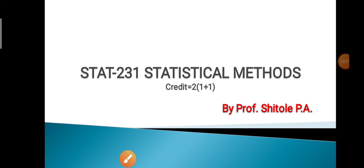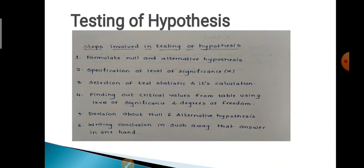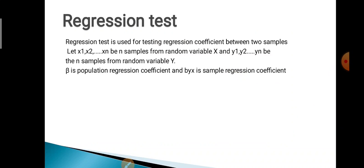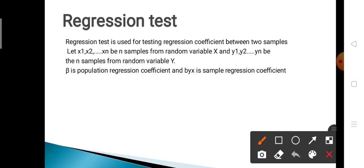Hello everyone. Today we are going to learn the next test in testing of hypothesis — the regression test. First we will see when we use the regression test and what steps are involved. The regression test is used for testing the regression coefficient. In the last lecture we learned the correlation test, which is used for testing the correlation coefficient. Similarly, the regression test is used for testing the regression coefficient between two samples.